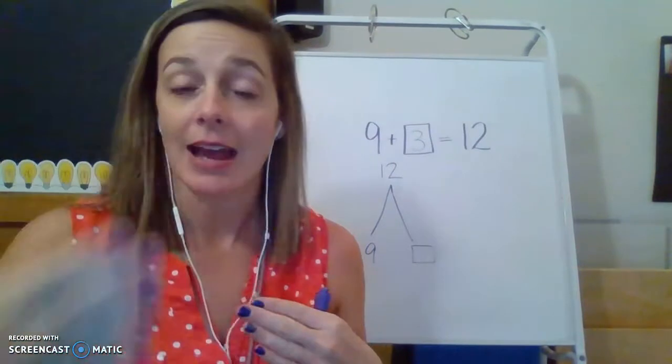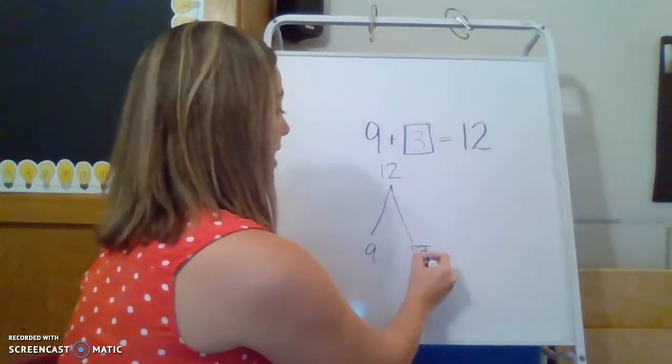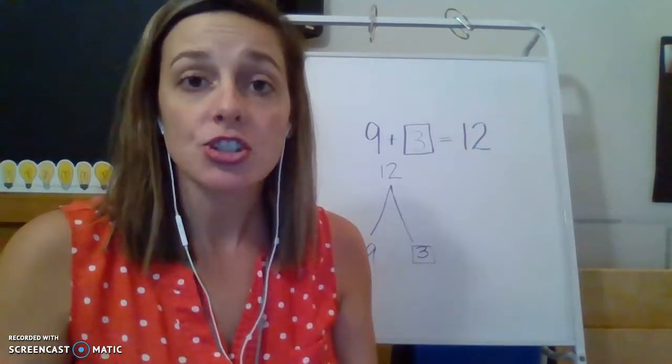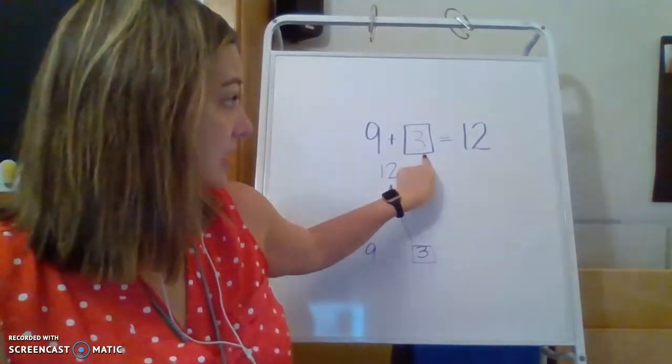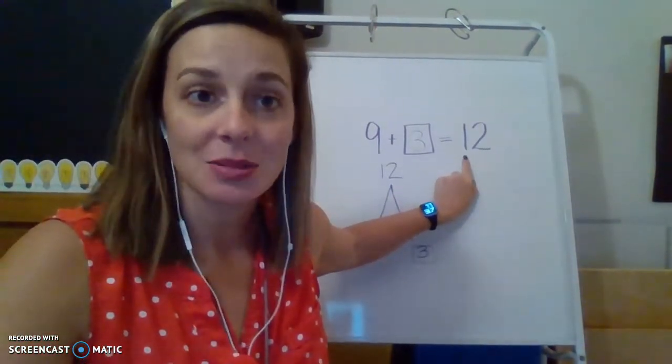So if I like to count up, that's a great strategy. If I like to count down, that's a great strategy. They both should get you the same answer. When you have a missing addend, you can either count up or count back.